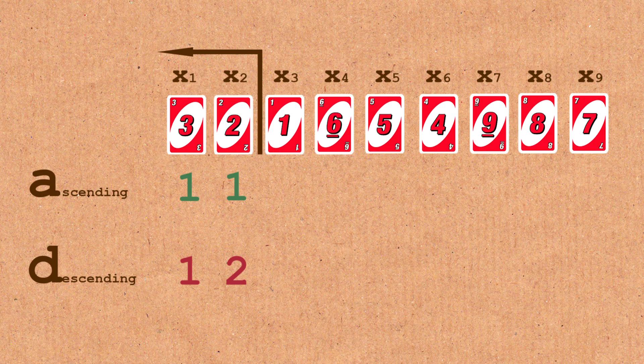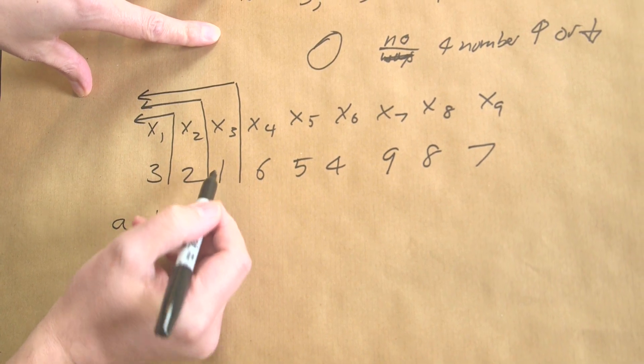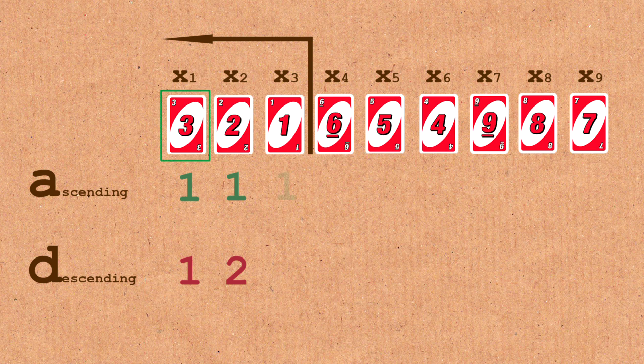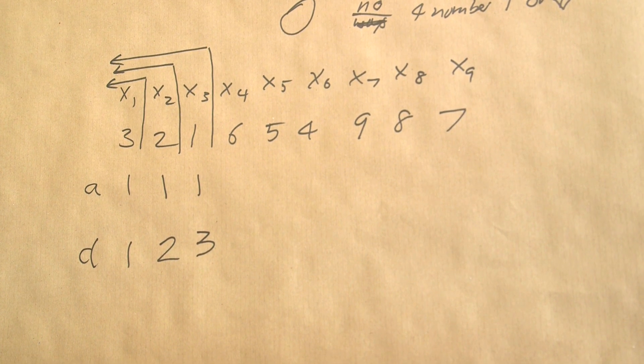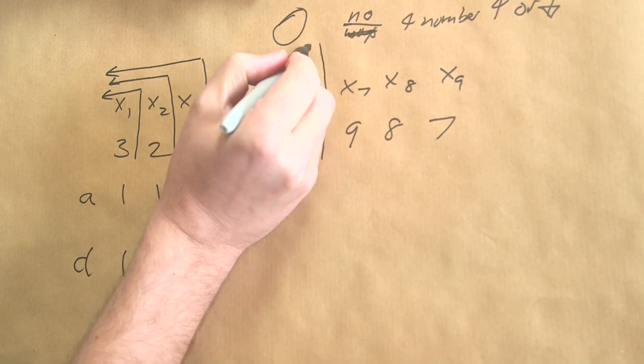Making sense. So now we look at three, and three again, one for ascending. Well, one is less than two is less than three, so there's nothing ascending to it, so it's still one. But now we've got three, two, one, so that goes three. But we don't have to just do this in sequence. What I want to do is jump ahead and look at x6 here.